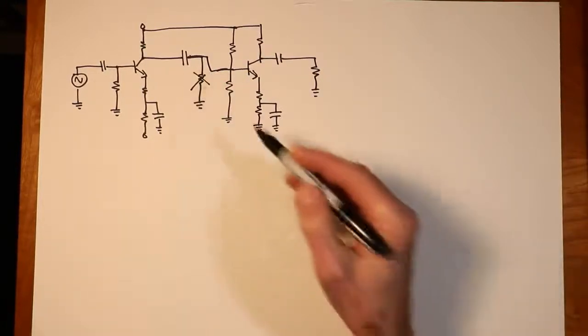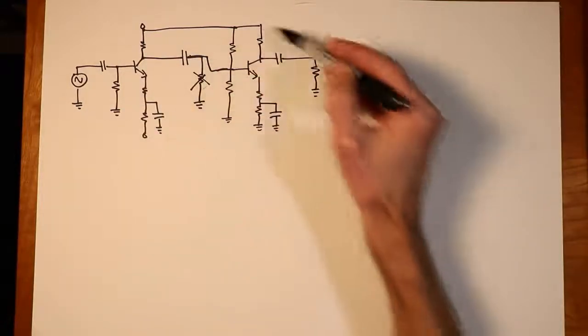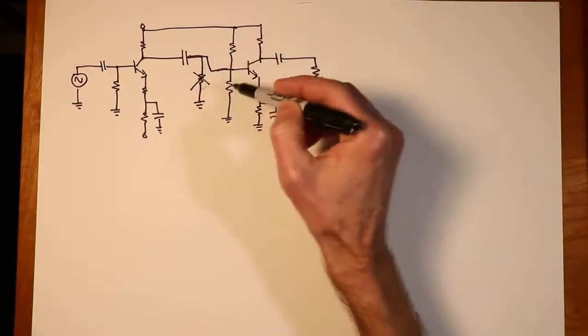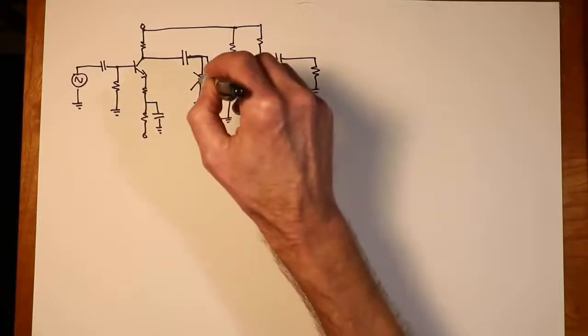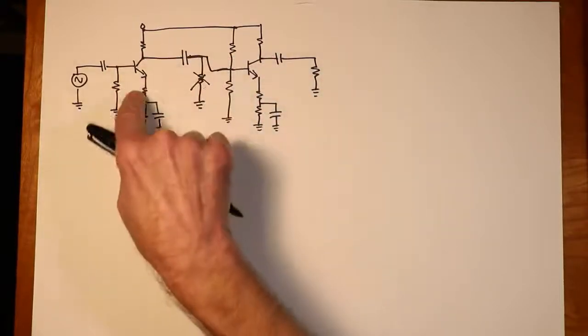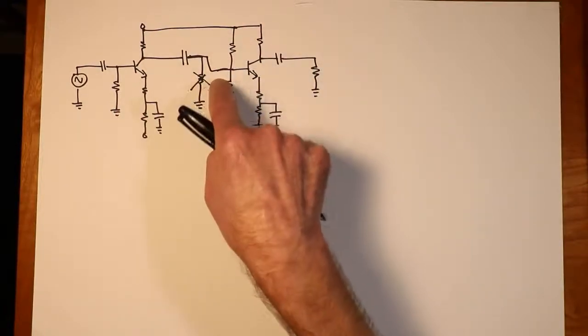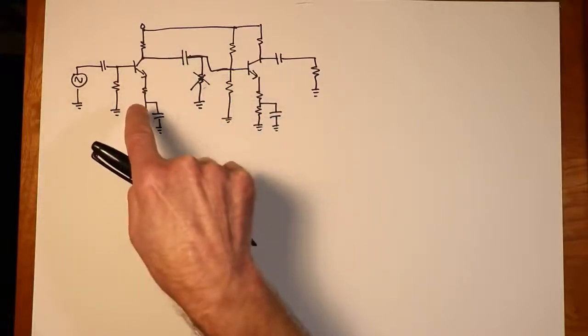So in order to do the analysis, we would first have to determine the second stage. In other words, find out what its input impedance is, and whatever this Z in happens to be, that is effectively the load that the first stage sees. So I would have to analyze this first in order to get that value, to get that Z in value, so I can determine what the gain of the first stage is.